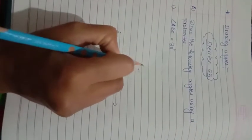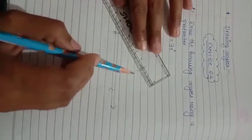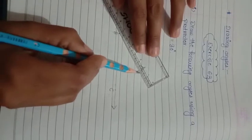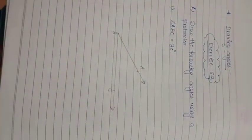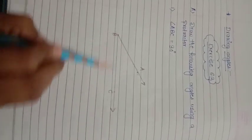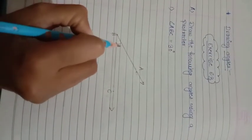Name this point A. Now join point A with point B using a ruler. So this is your angle ABC which is 30 degrees.